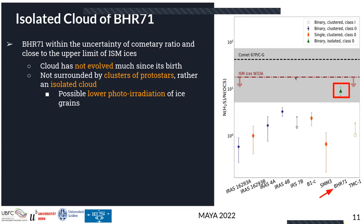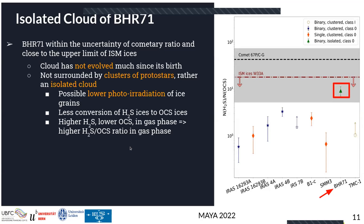Because BHR 71 is an isolated source, it may have received lower photo-irradiation. What photo-irradiation does is convert H2S ice to OCS ice when H2S reacts with CO. In the class 0/class 1 protostellar phase, when the core heats up, these ices sublimate to the gas phase — so the chemical content we observe in the gas phase with ALMA depends on what was present on the ice. Lower photo-irradiation would mean lower H2S-to-OCS conversion, hence a higher H2S/OCS ratio in the gas phase.